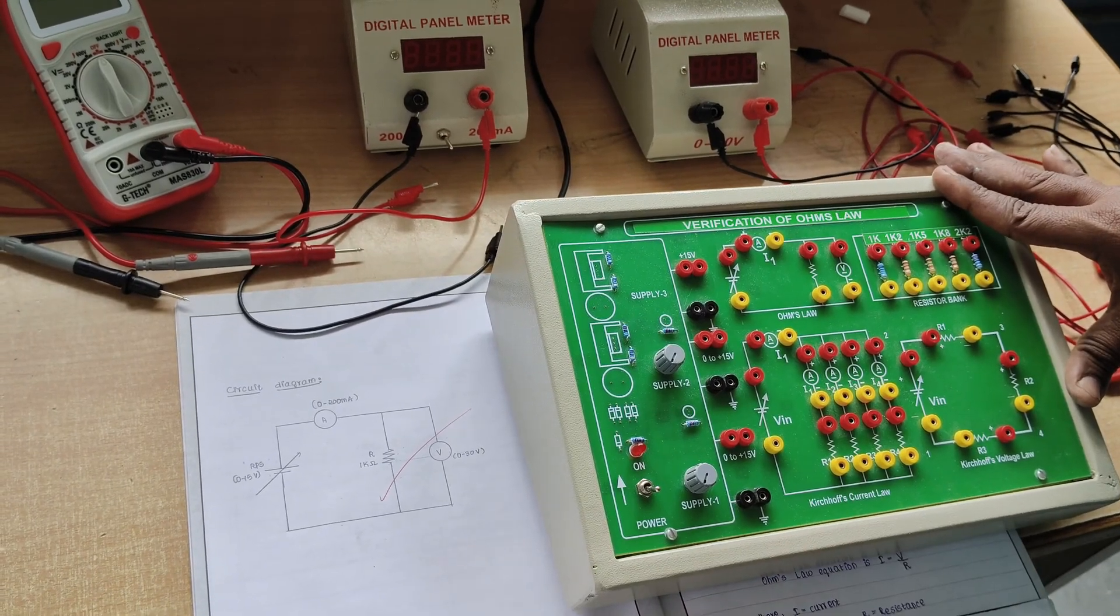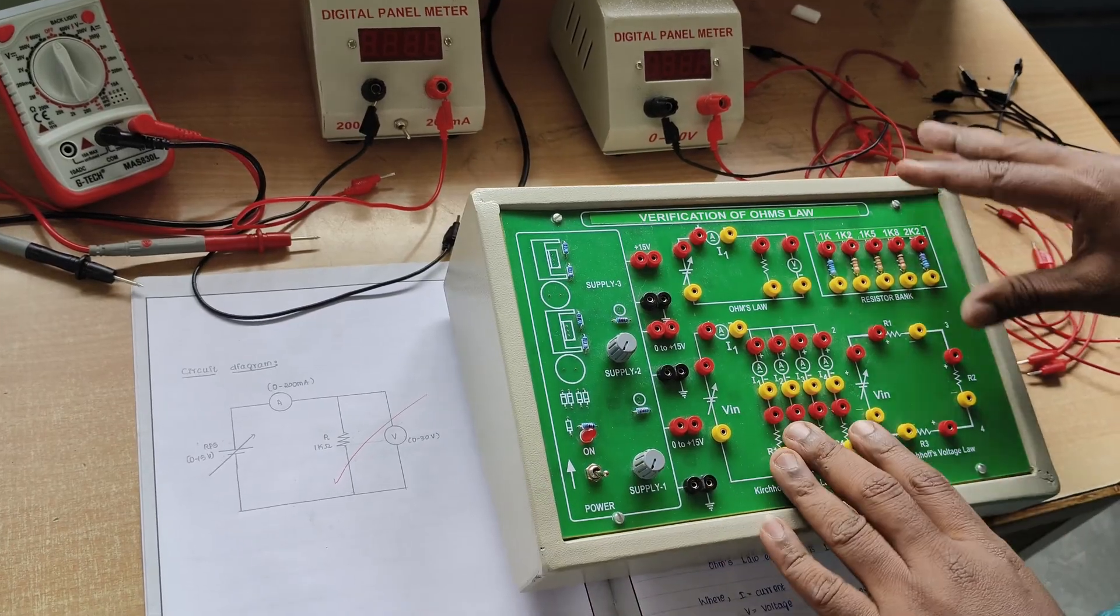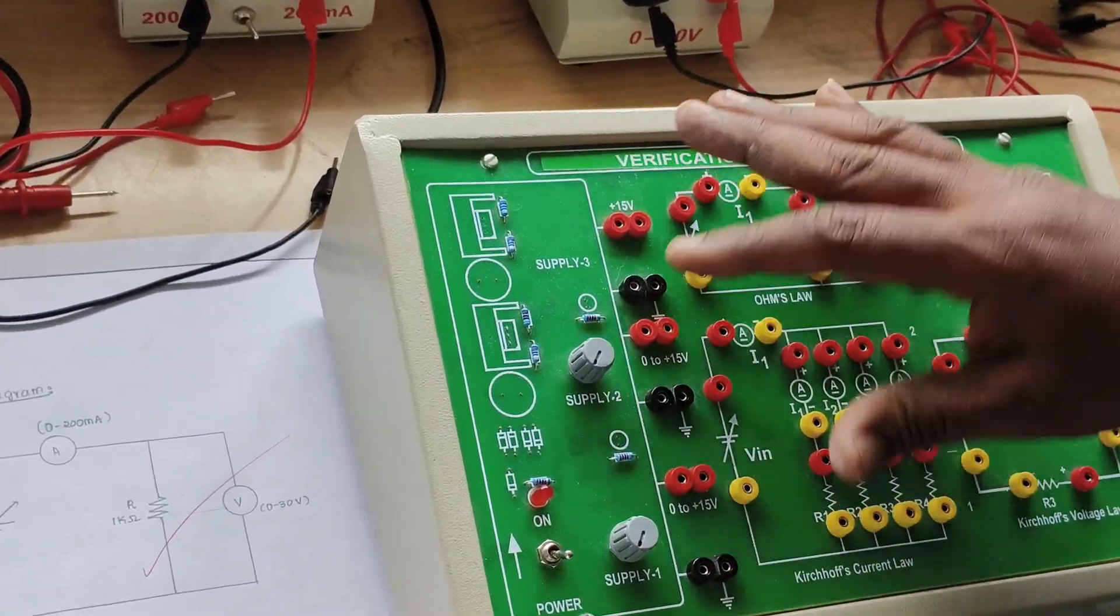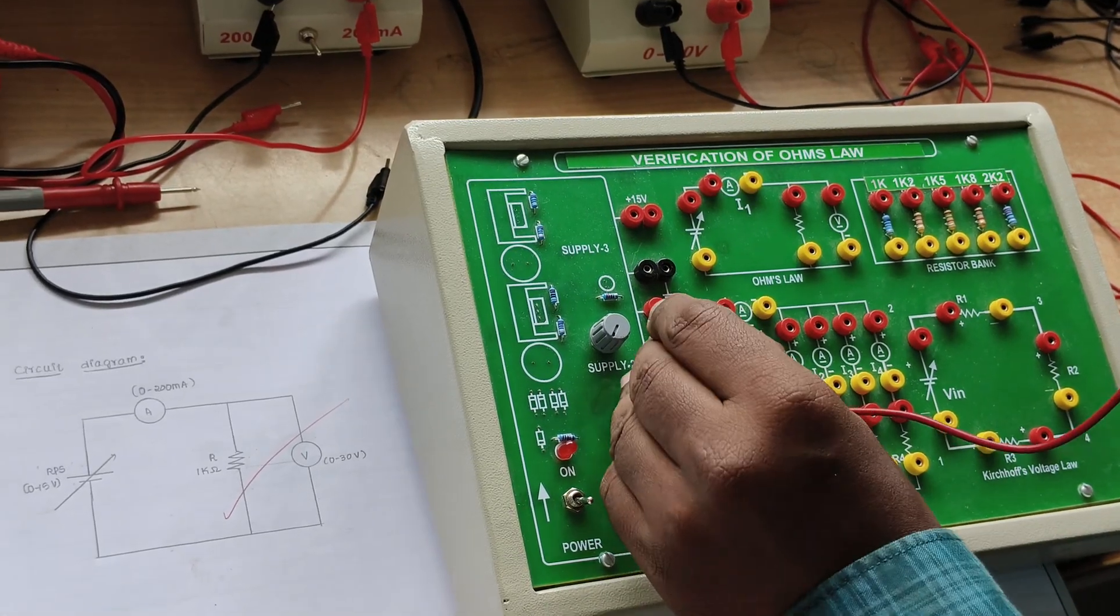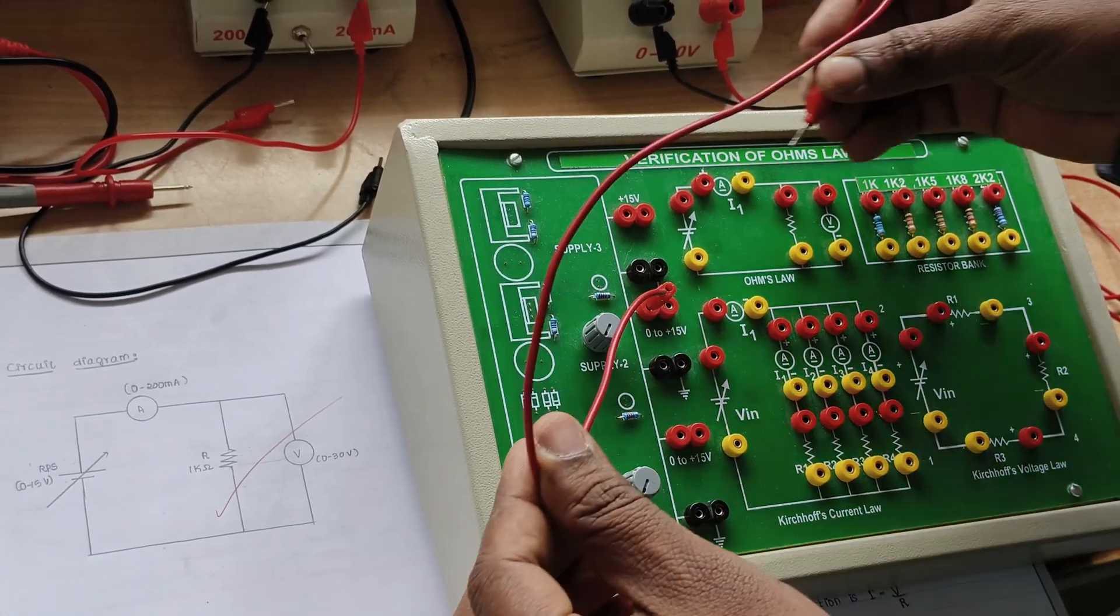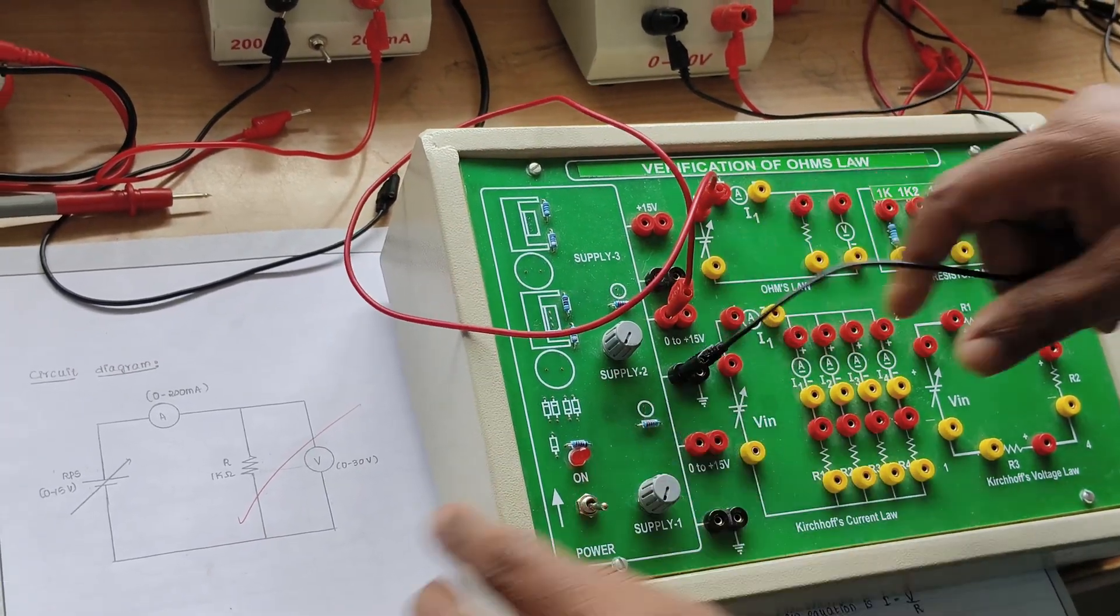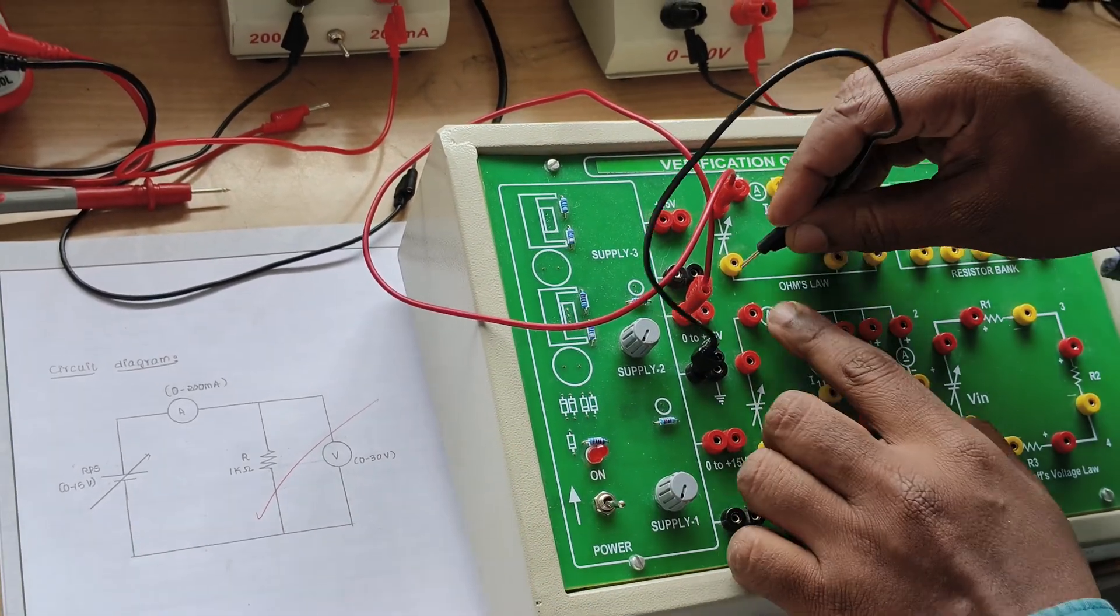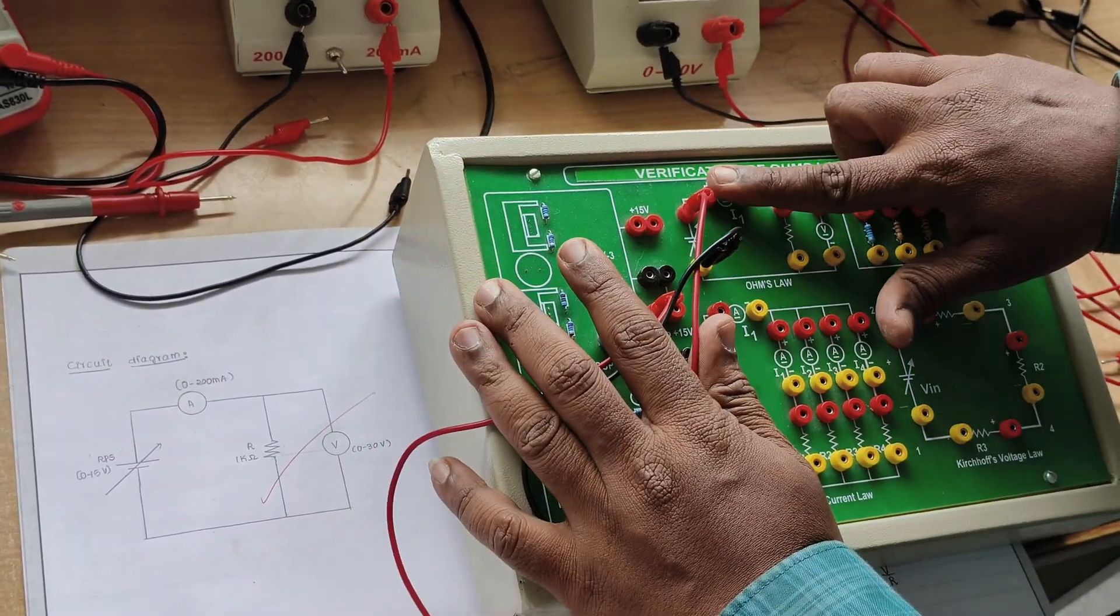To verify Ohm's law practically, we have a regulated power supply (RPS). We are going to connect the RPS from positive to here, and from the negative supply to here. After connecting the RPS, we need to connect the ammeter.